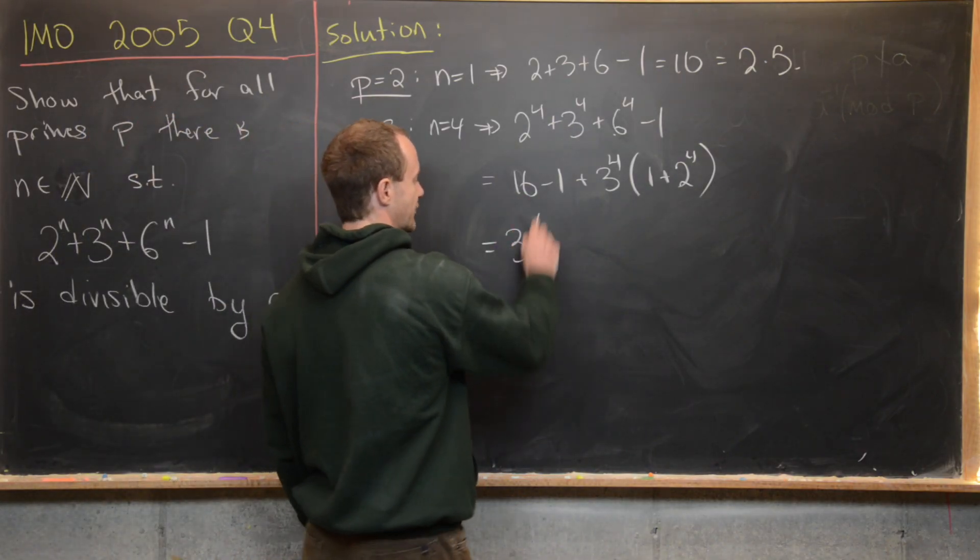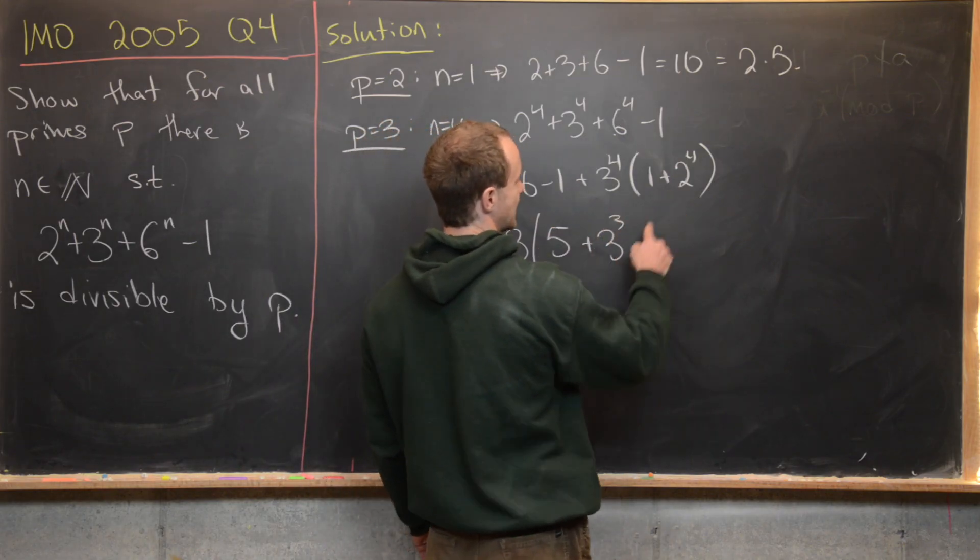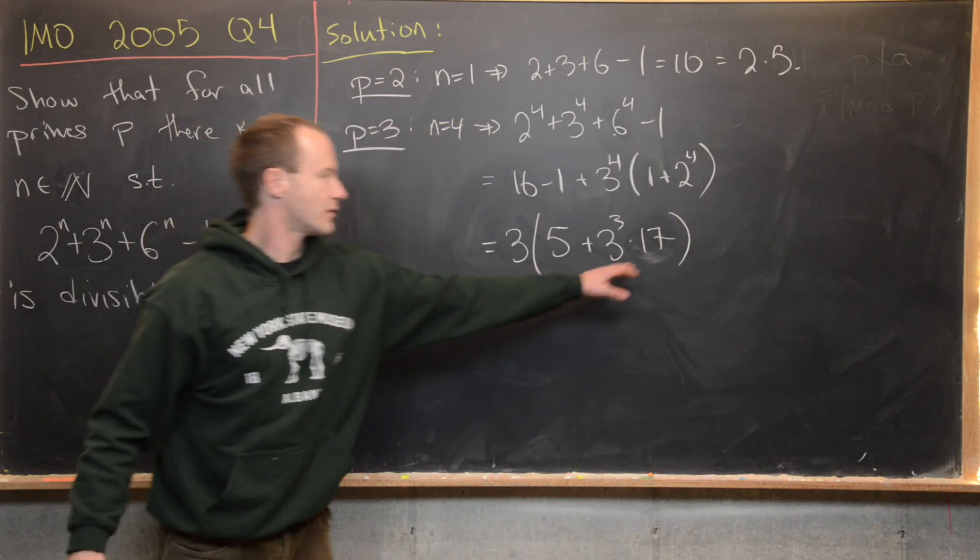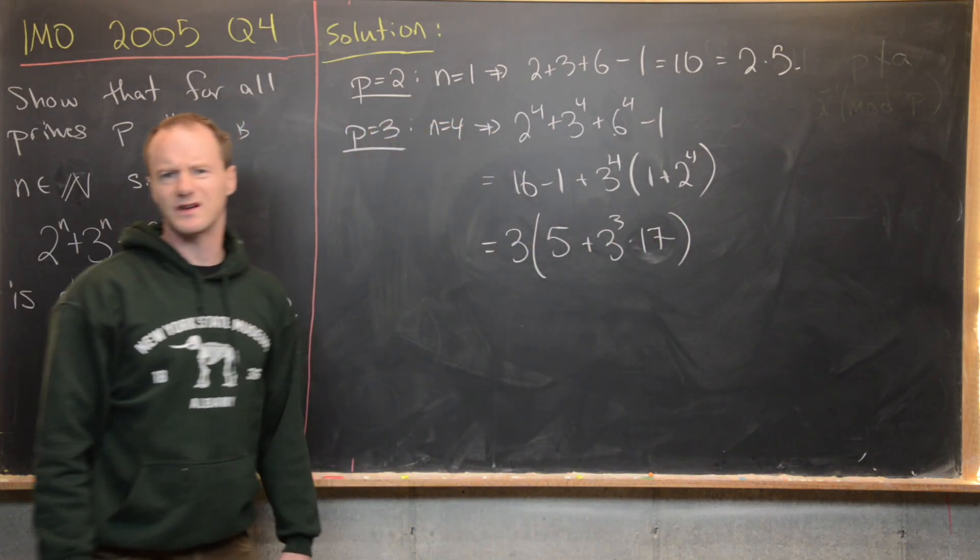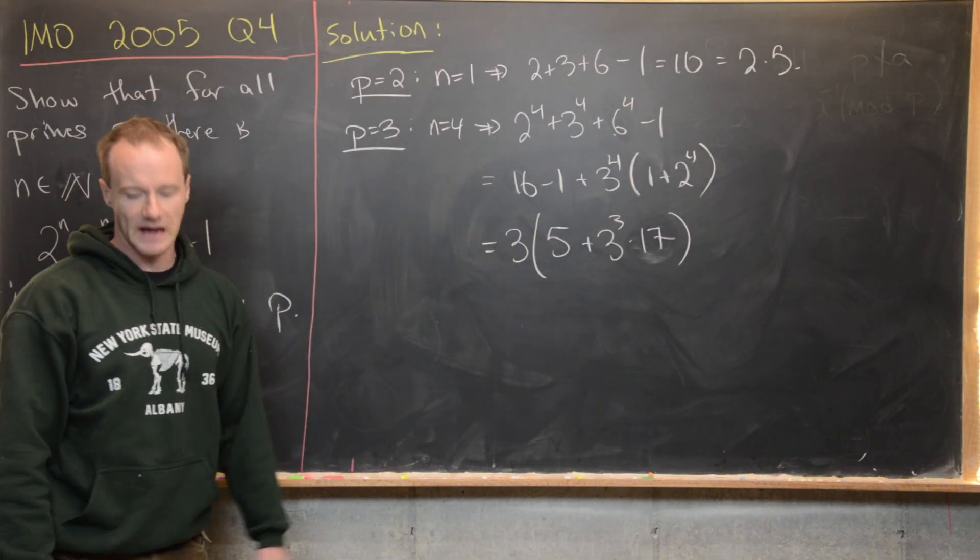So I can take a 3 out of that, and then I have 5 + 3^3, and then notice that this is going to be 17. We don't really care about exactly what this number is like expanded out. All we care about is this is a multiple of 3, and it is.